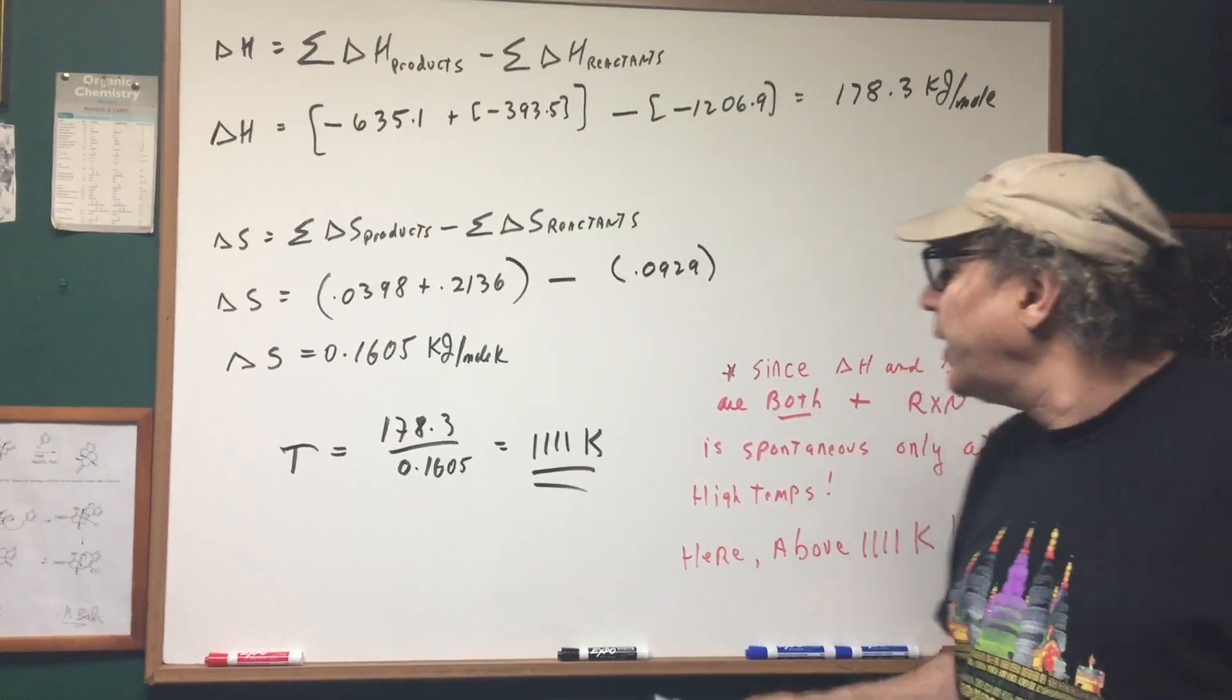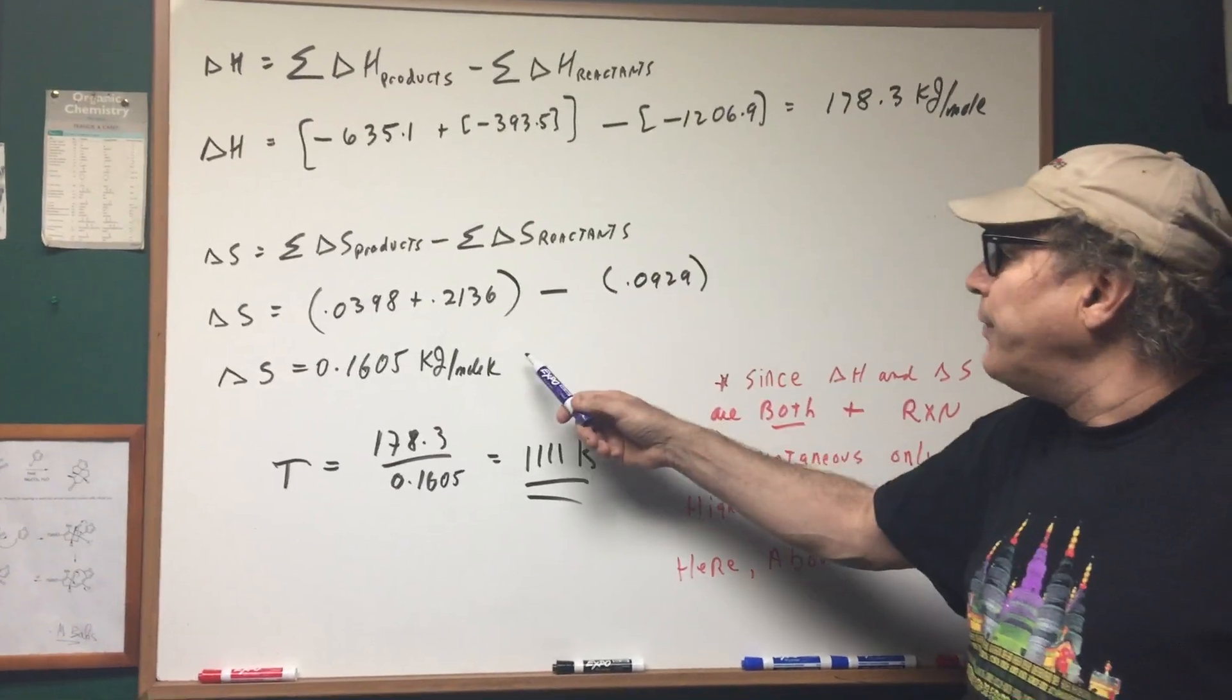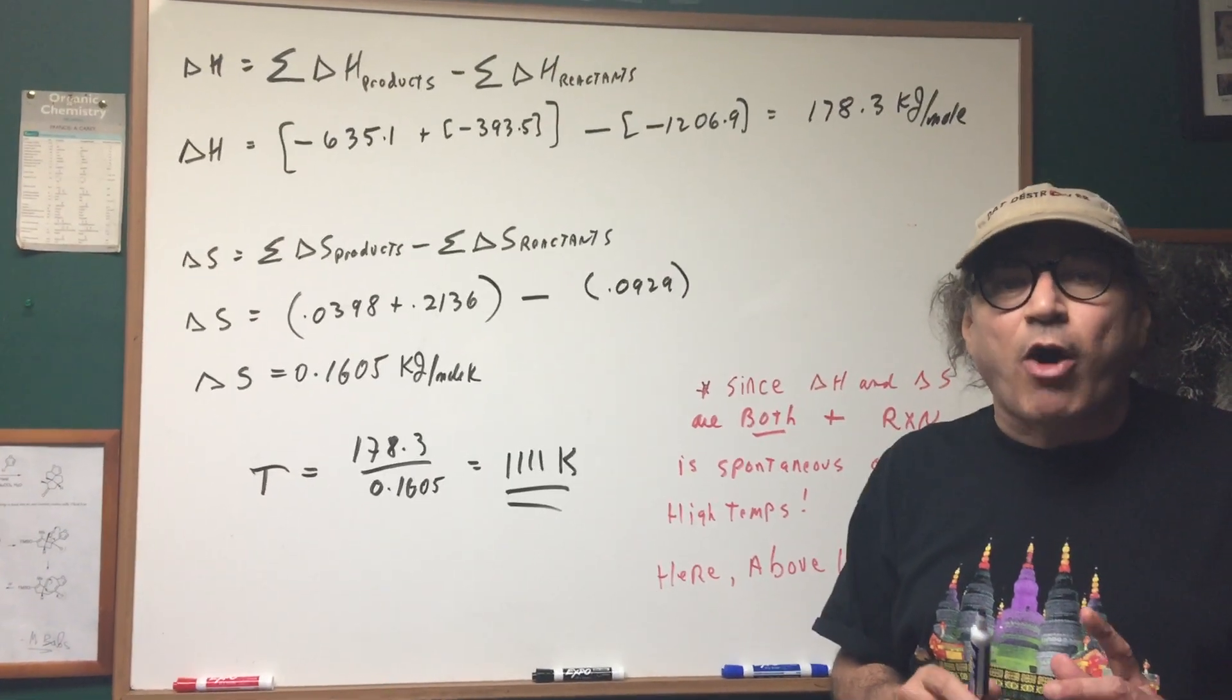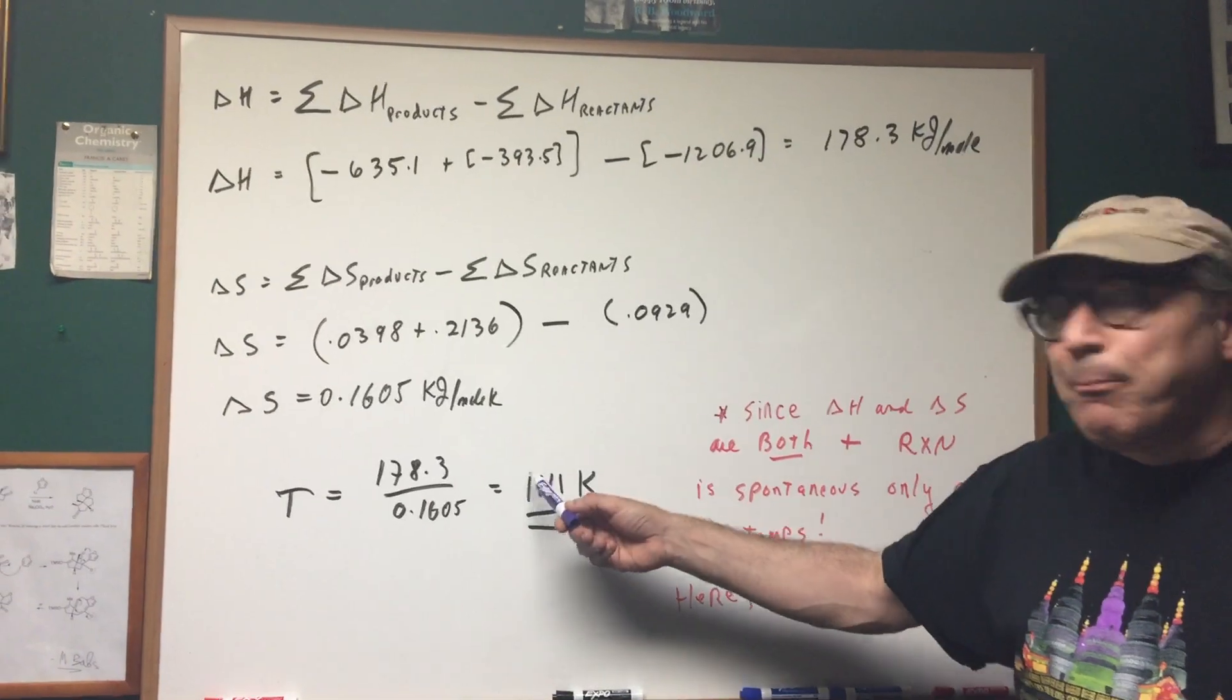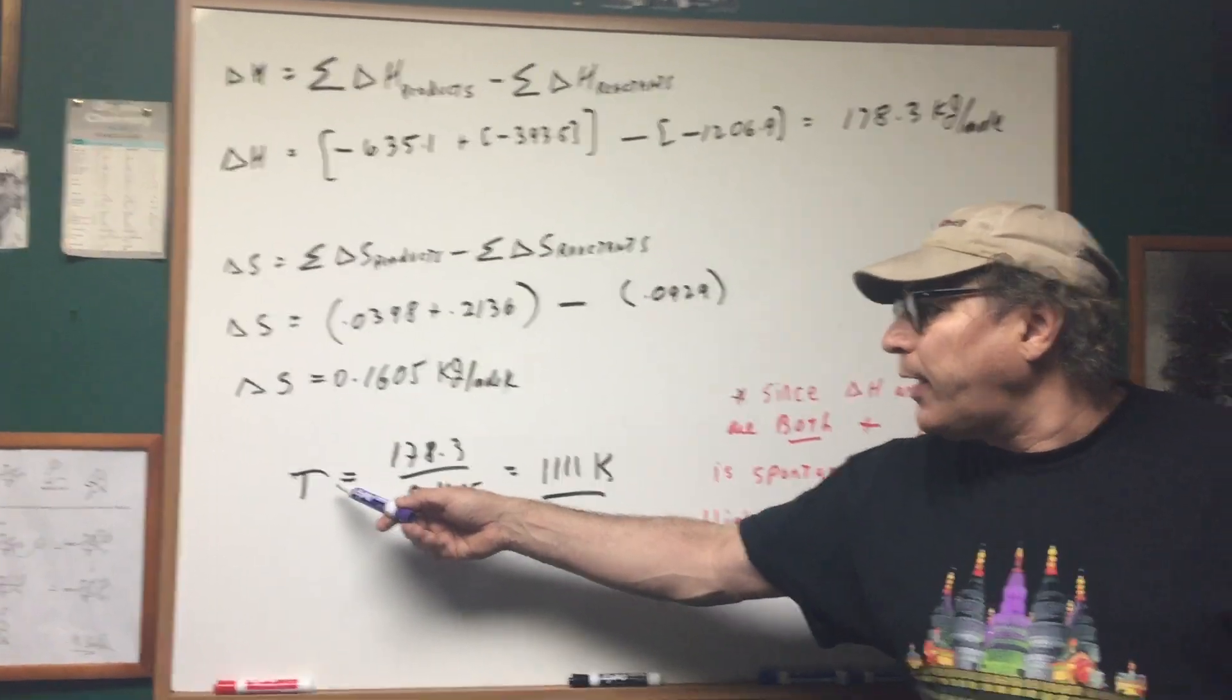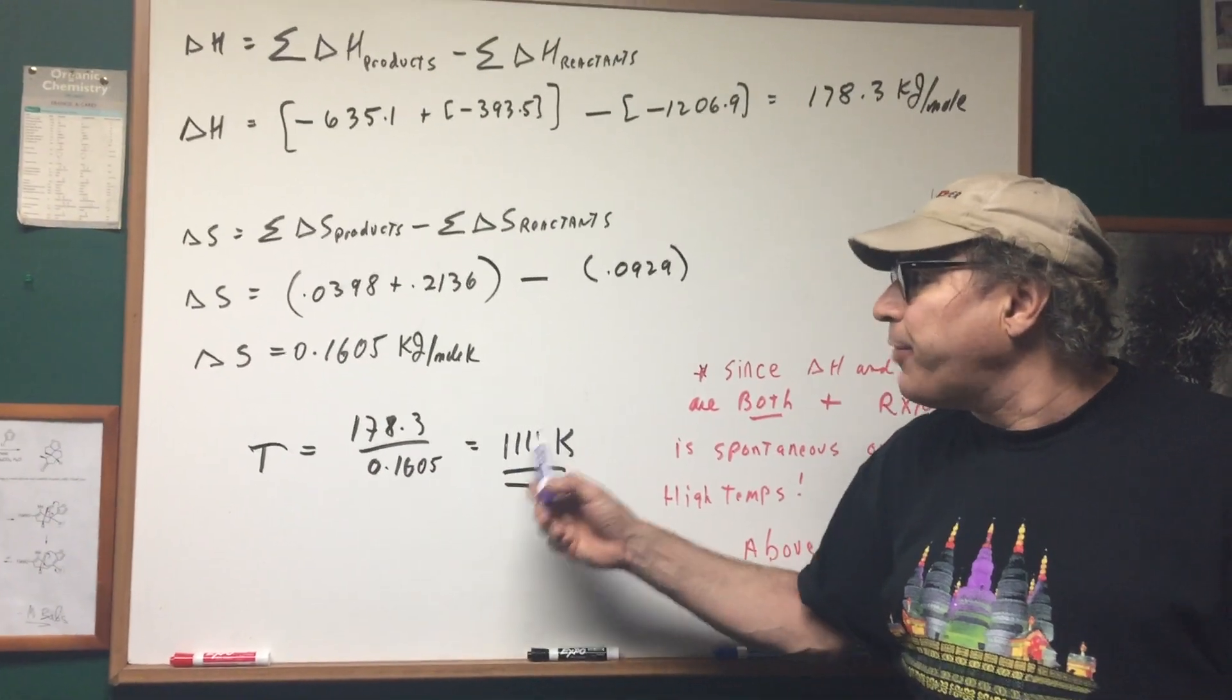Now, I want you to make sure we understand what just happened. Since the Delta H was positive and the Delta S was positive, that means the reaction can only occur spontaneous at high temperatures. So the question is, how high? Above the equilibrium point. So as you can see, if the H's are both positive, you find the value of the equilibrium temperature and if you're above that.